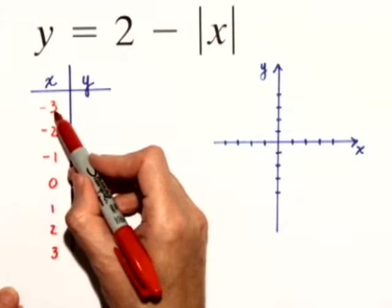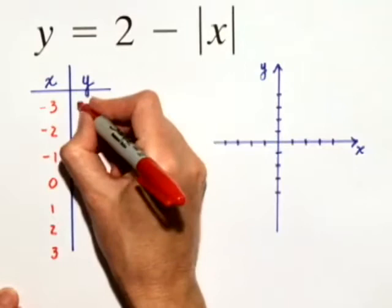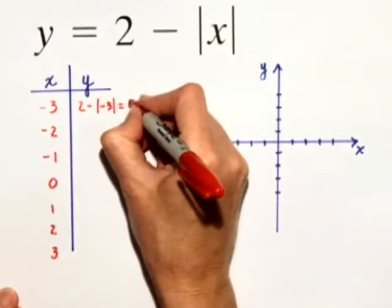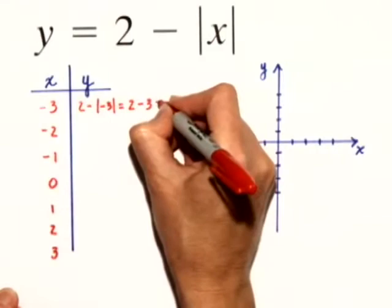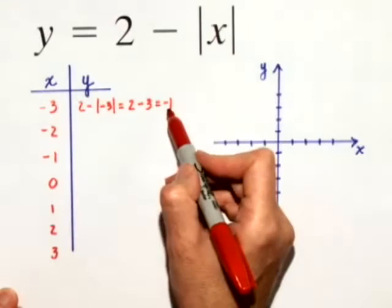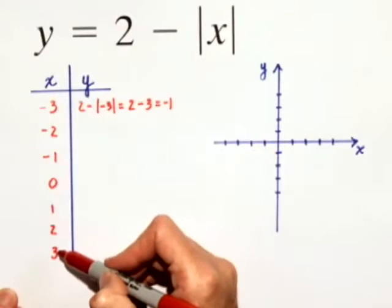So if x is negative 3, we're going to substitute negative 3 into our original equation for x. The y value will equal 2 minus the absolute value of negative 3. The absolute value of negative 3 is 3, so 2 minus 3 is negative 1. Therefore, when x is negative 3, y is negative 1. That's a coordinate on the graph.